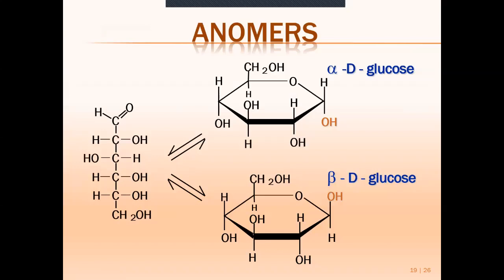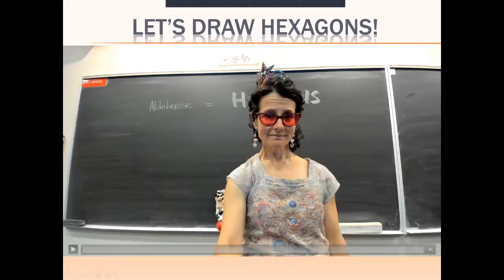In our body, sugars aren't in this stretched linear form — they'll be cyclic, like hexagons. At the position next to the oxygen in the ring, if the OH is down, we call it alpha; if the OH is up, we call it beta. Alpha looks like a fish — fish swim down in the ocean. Beta looks like a butterfly or a bird buzzing up in the sky. So: beta is up, alpha is down.